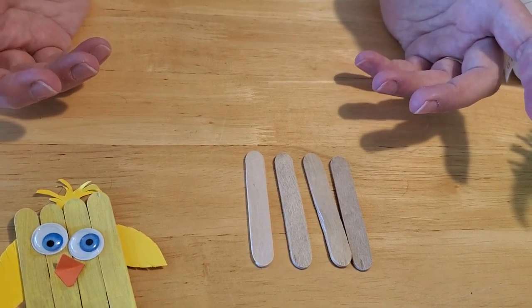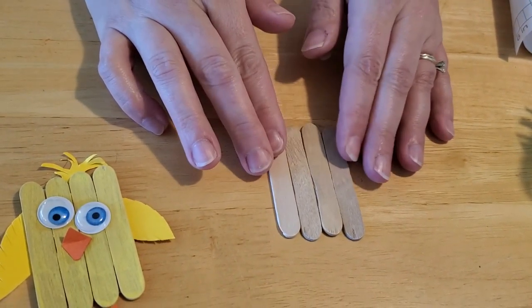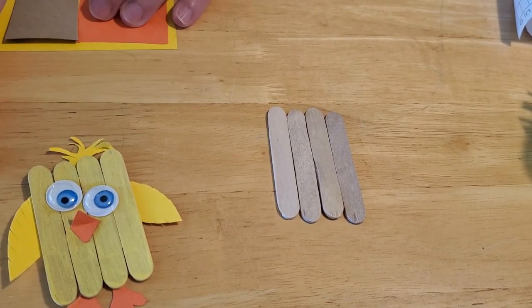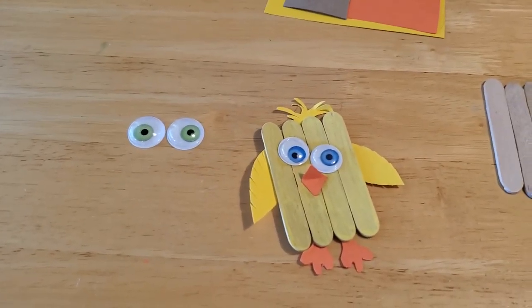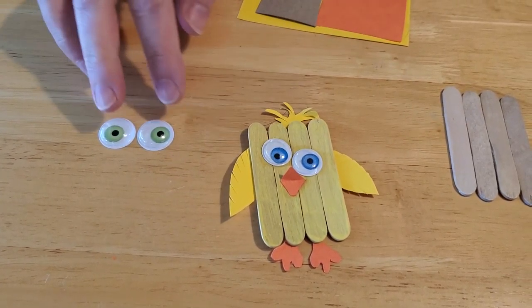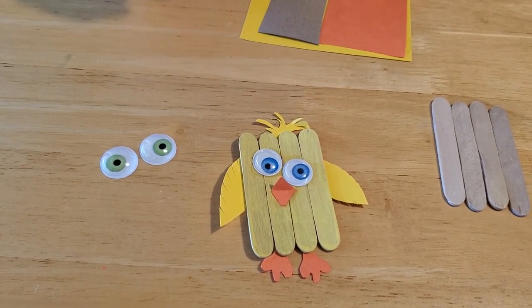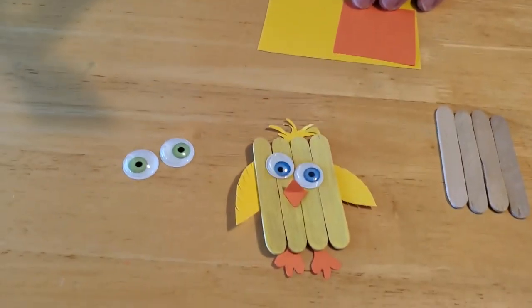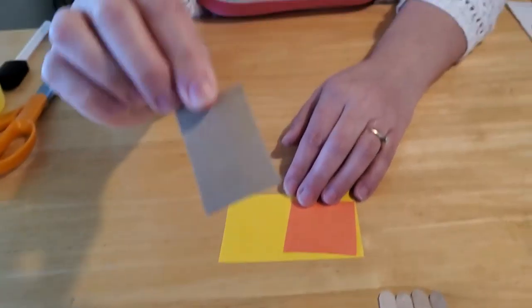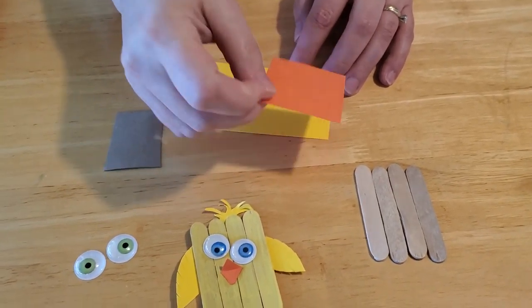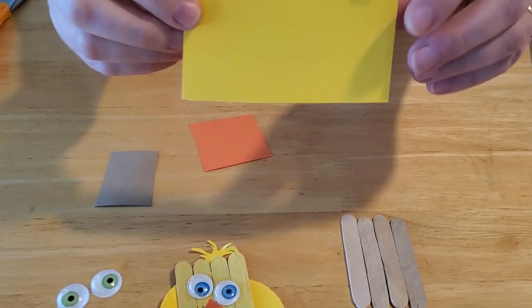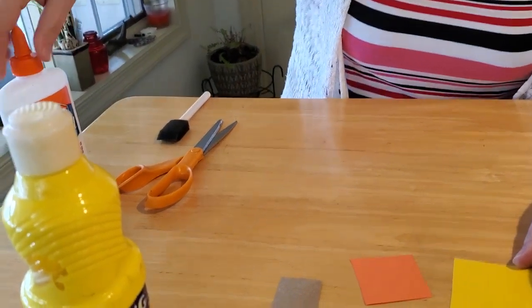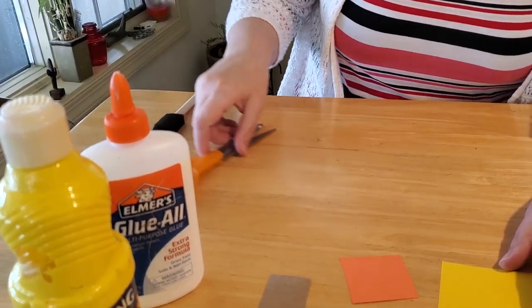You're going to need a pair of googly eyes or a marker to make eyes if you don't have them. I found these colored eyes. I thought they gave our chicken just a little bit more personality. You're going to need a thin strip of cardboard. You can cut up a little piece of cereal box or a manila folder. You're going to need a small square of orange construction paper and a yellow rectangle of yellow construction paper or cardstock. You're also going to need yellow paint, and you're going to need some glue and scissors and a paintbrush.